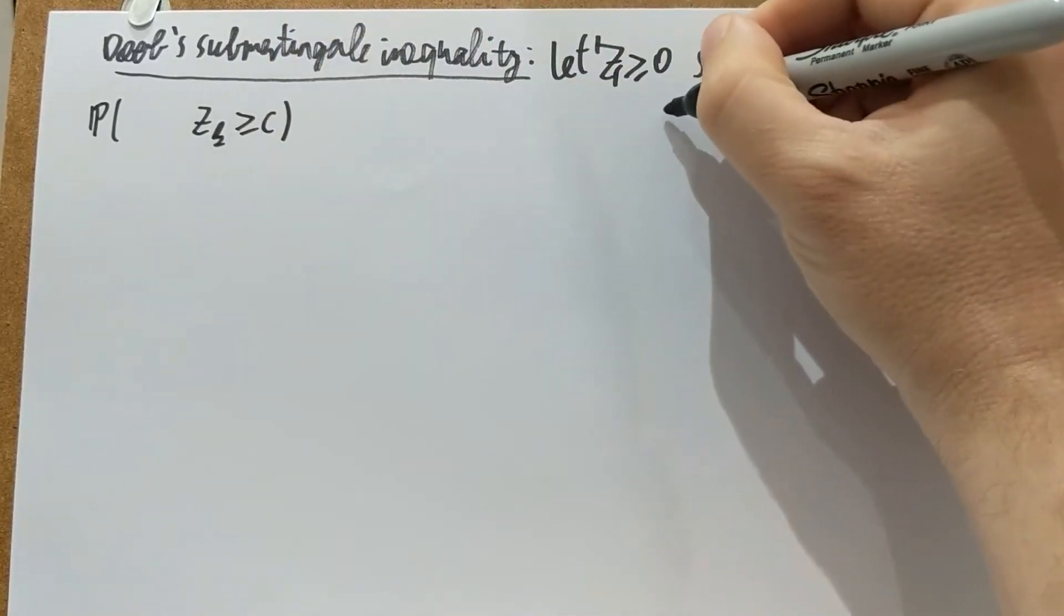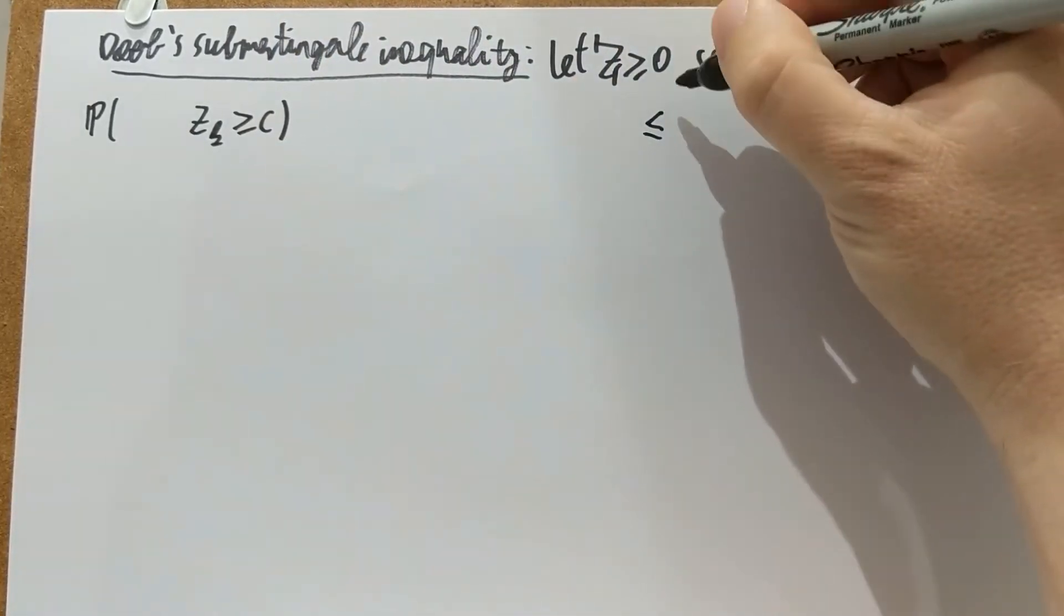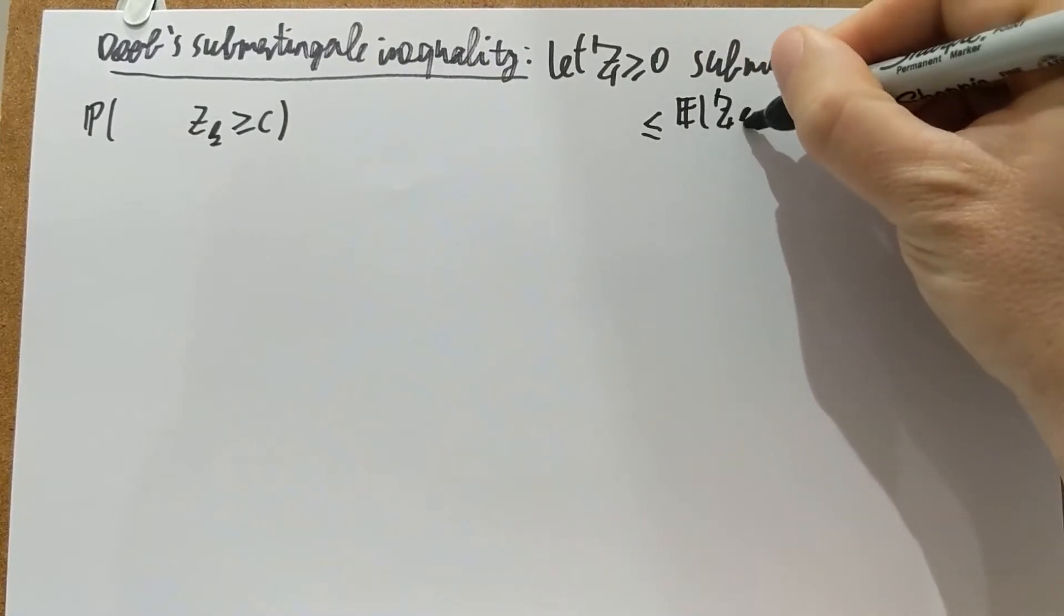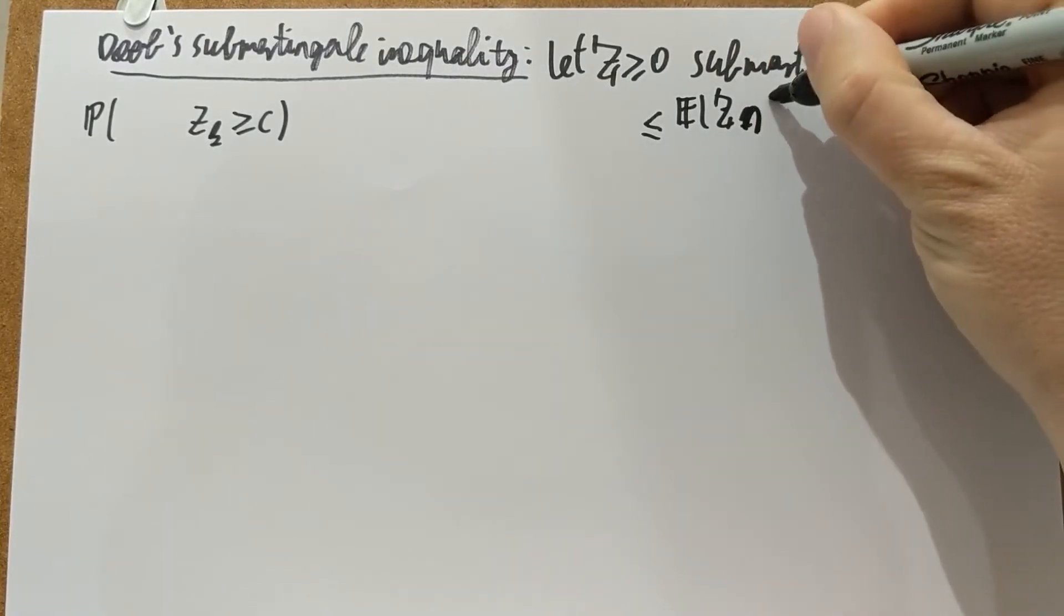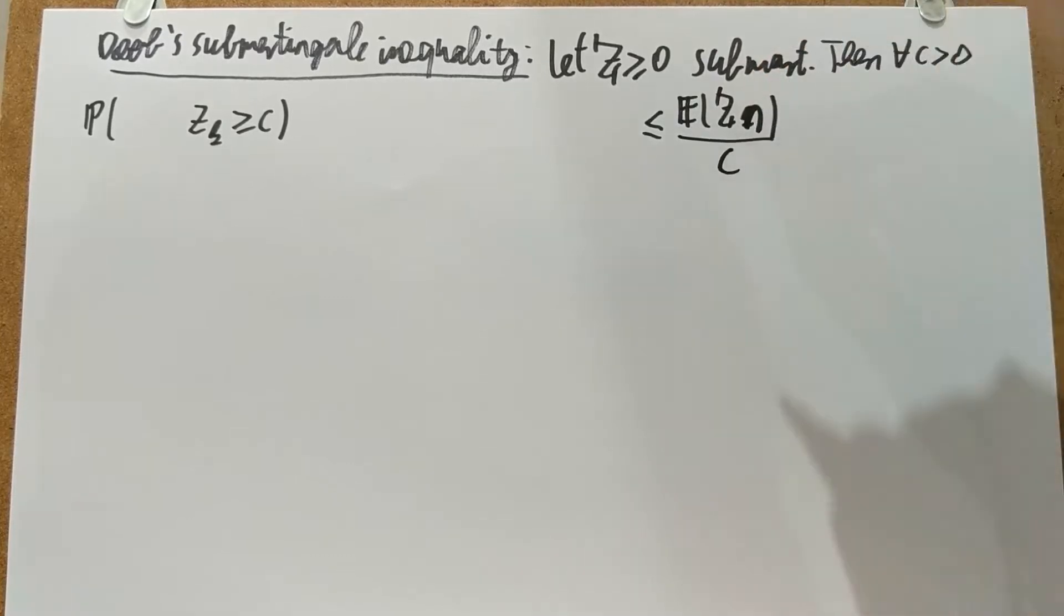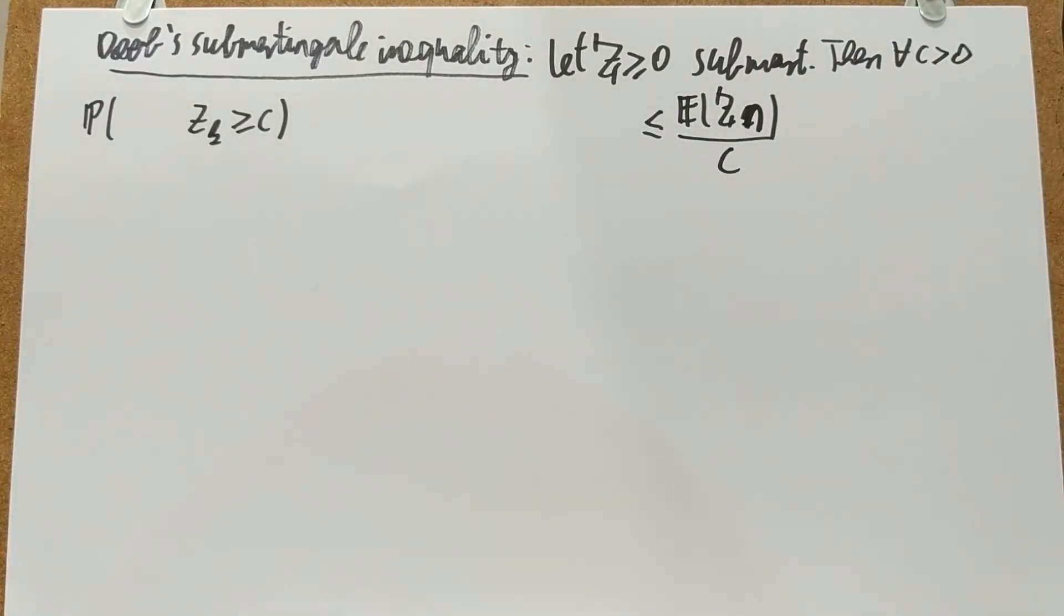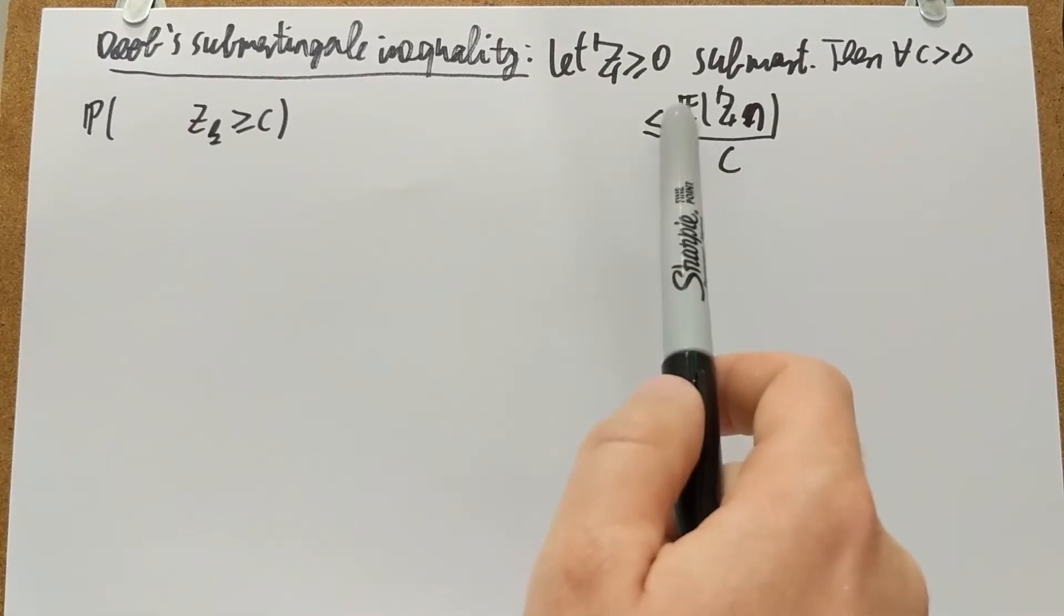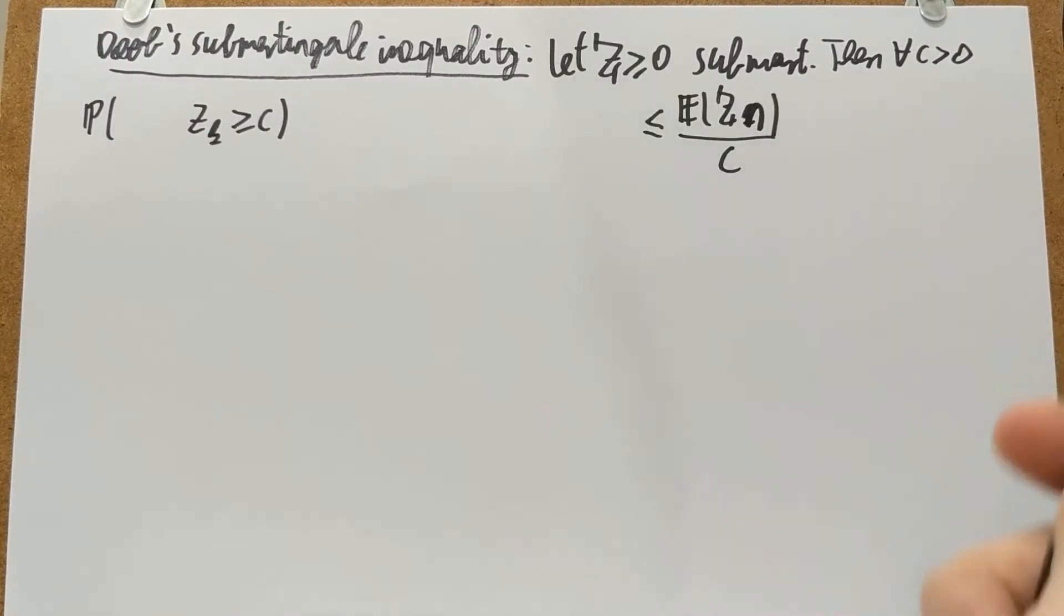So that doesn't make any sense at the moment, but I just want to emphasize that if this was N, then this would just be Markov's inequality. If this was here Z_N larger than C, smaller than or equal to E of Z_N over C, Z is non-negative, this would just be Markov's inequality.